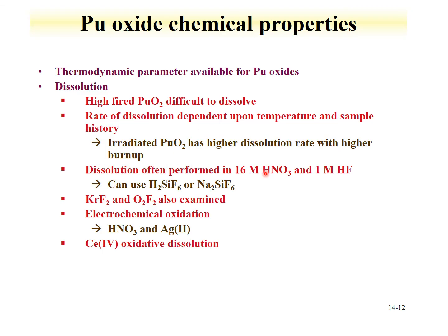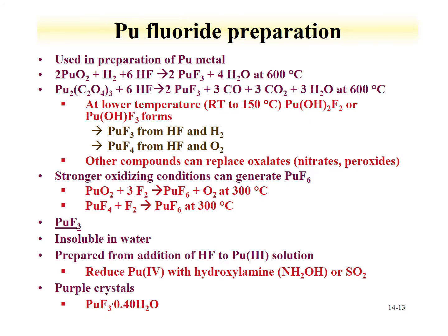The dissolution of plutonium dioxide is dependent upon the temperature and sample history. Irradiated dioxide has a higher dissolution rate with higher burn-up. Dissolution can often be performed with the addition of HF and other strong oxidizing agents, electrochemical oxidation, or with the use of cerium. Plutonium fluorides are important compounds for the nuclear fuel cycle, particularly in the preparation of plutonium metal. The trifluoride can be made with the dioxide, hydrogen, and HF, or from oxalate precipitate with HF.